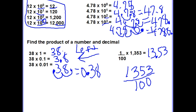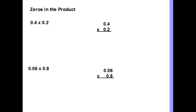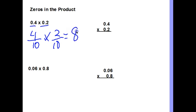Now let's look at zeros in the product. There are two ways to look at zeros in the product, and notice that both of these factors have decimals. I can use the fraction approach to help me solve. So this is 4 tenths times 2 tenths equals 8 hundredths, because 4 times 2 is 8 and 10 times 10 is 100. My decimal answer needs to be 8 hundredths, written as 0.08.